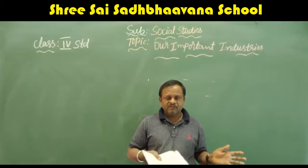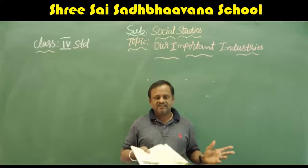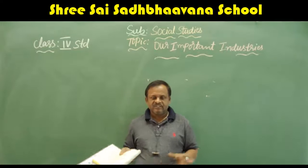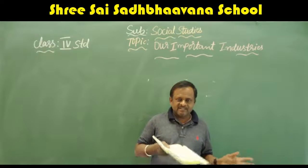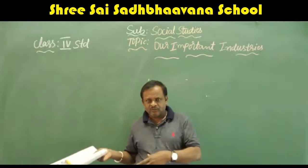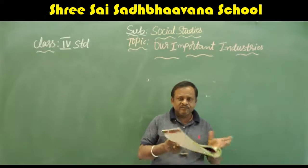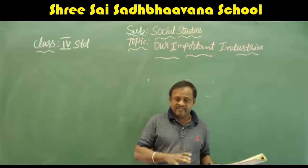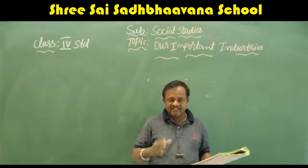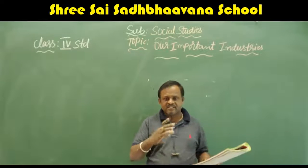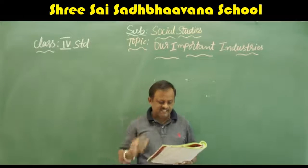For example, cotton is taken to the cotton industry and converted into clothes — that finished product is called finished goods. The place where cotton is converted into finished clothes is called the cotton industry. Similarly, oil seeds are taken to the oil industry where they are converted into oil. Like that, we take raw materials to the industry and the finished goods come out — that place is called an industry.